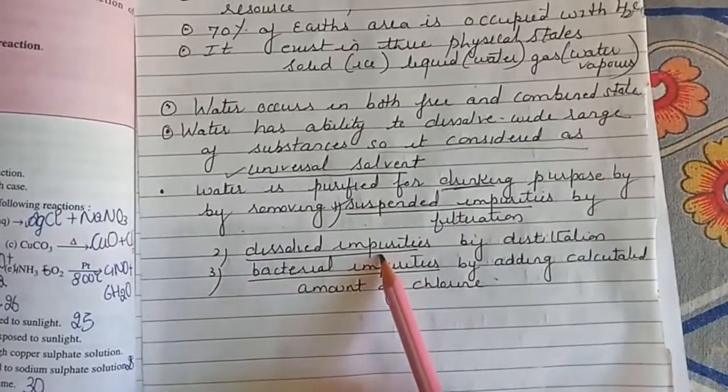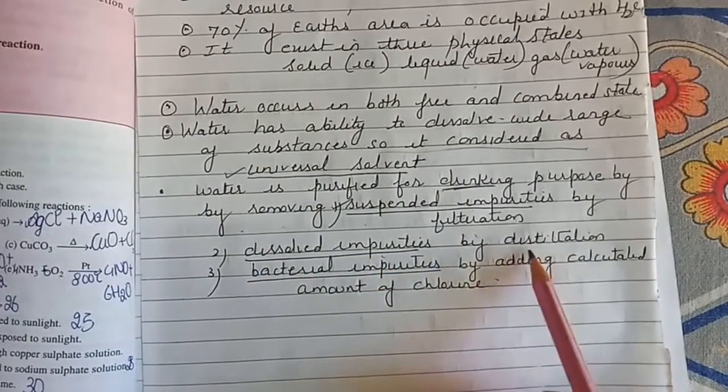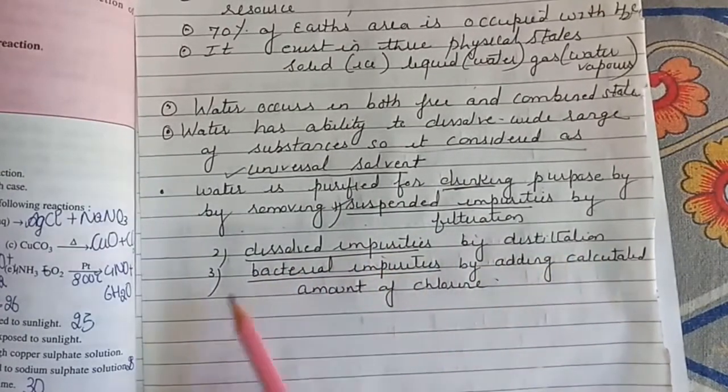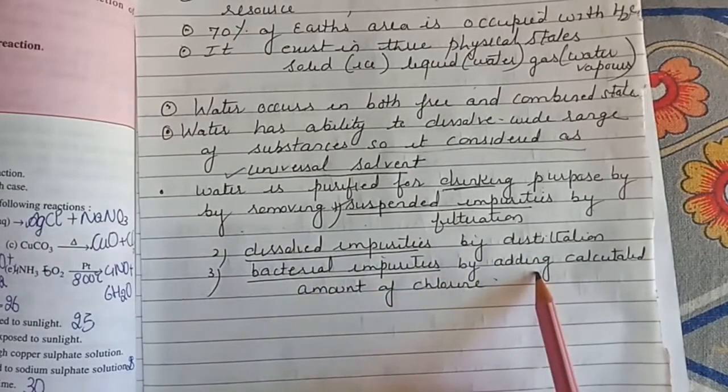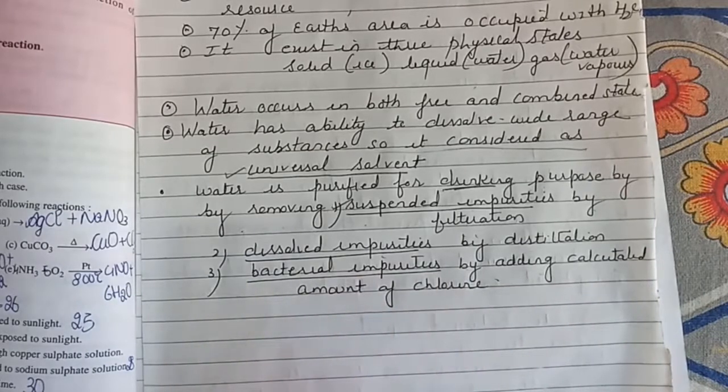Water contains suspended impurities which are removed by filtration. Dissolved impurities are removed by distillation, and bacterial impurities are removed by adding a calculated amount of chlorine.